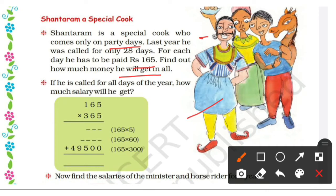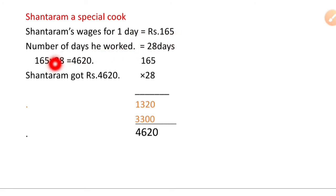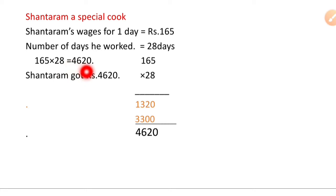Last year he worked 28 days. One day salary is 165 rupees. So his total salary for 28 days: we multiply 165 by 28. The number of days he worked is 28, and one day salary is 165 rupees. So for 28 days we multiply 165 × 28 and we get 4,620 rupees. We will see the column method.